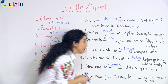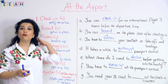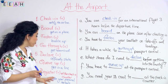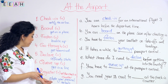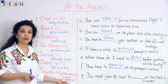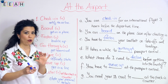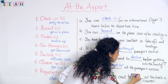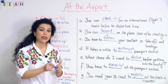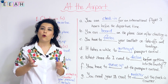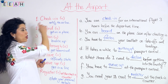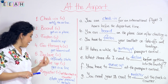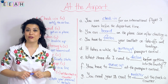'To register' at the check-in counter means to state your personal details. For example: you need your ID card to register at the check-in counter. So what have you learned today? Seven verbs: to check in, to board, to fasten, to go through, to declare, to queue up, and to register. Well done!